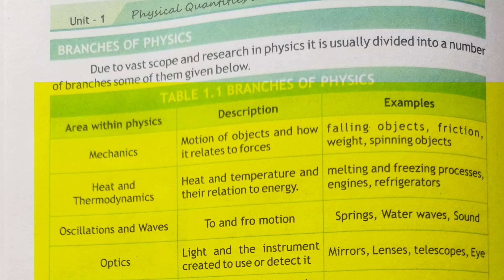The next branch covers oscillations and waves. Oscillation refers to vibration — for example, a spring vibrating back and forth produces oscillatory motion. This is called oscillation motion.